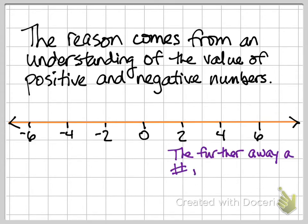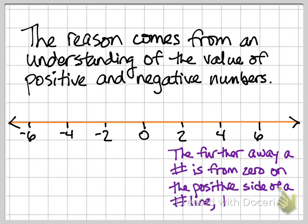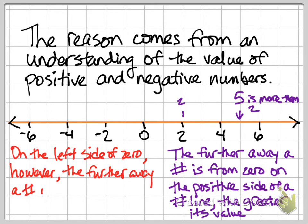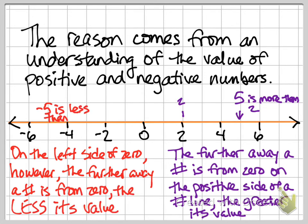Again, every skill from the equations unit will transfer to this unit, but there is one extra thing. When you divide by a negative coefficient, only a negative coefficient, the direction of the symbol reverses direction. Here is an example of that.